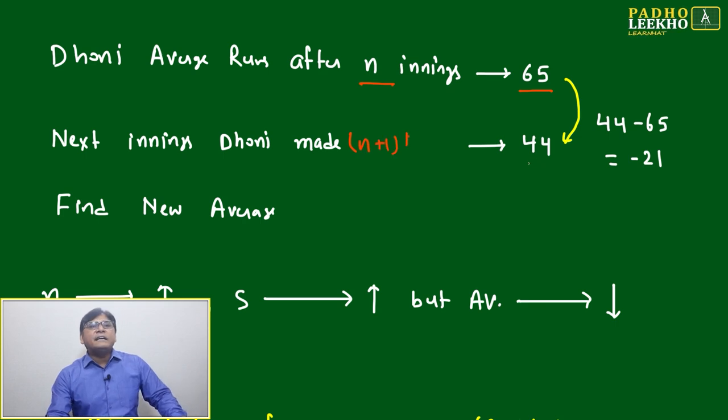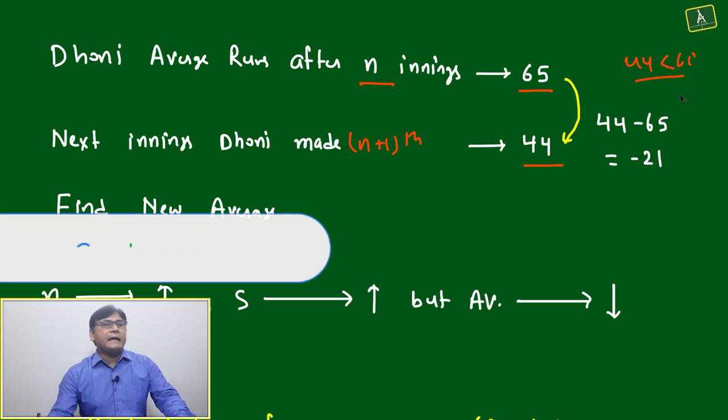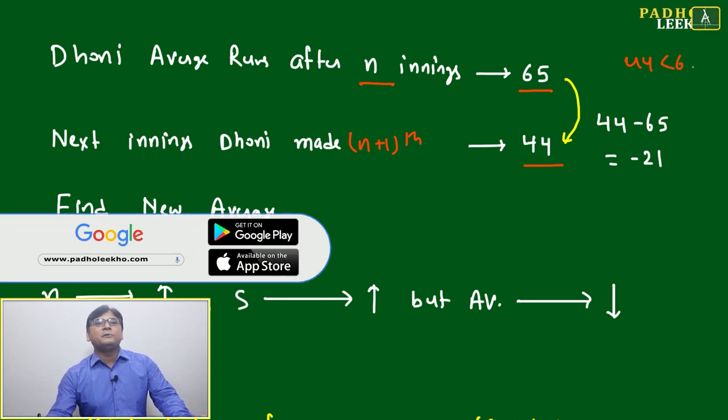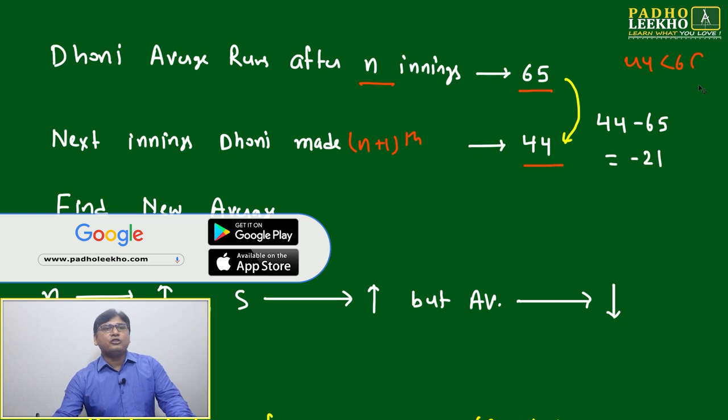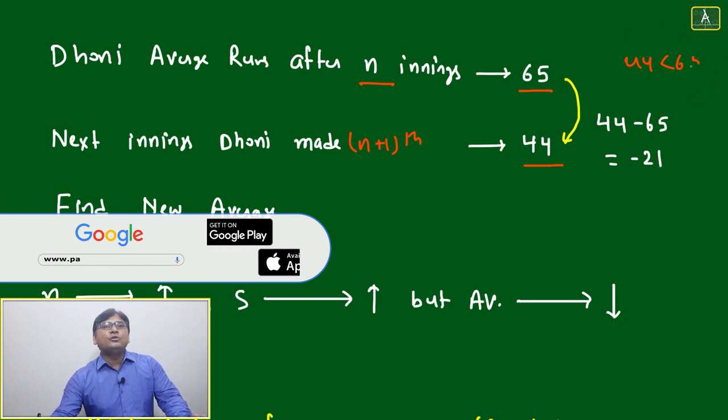What is happening here? 44 is less than 65. That difference we have to count, because based on this difference we will be able to logically conclude whether the new average will be more than 65 or less than 65.